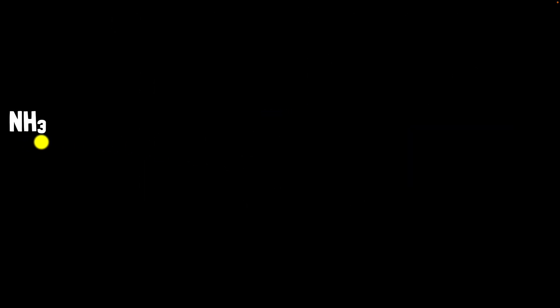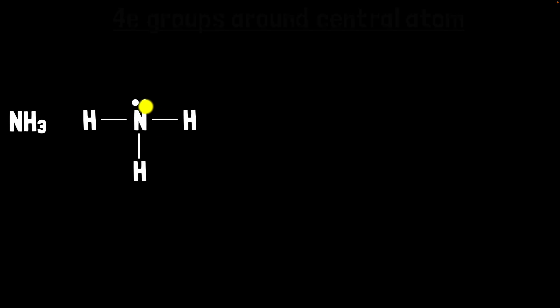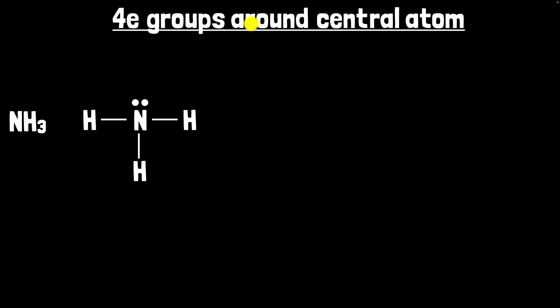Next up, we have ammonia, whose Lewis structure looks like this. Remember that nitrogen has a lone pair. We have three bonds surrounding the central atom, but VSEPR doesn't care about the number of bonds — it cares about the number of electron groups. Counting them: one, two, three bonds, and the lone pair of electrons is also an electron group. VSEPR doesn't care whether the electron group is bonded or a lone pair. What matters is the number of groups, and there are four groups. By the way, the technical name is electron domains.